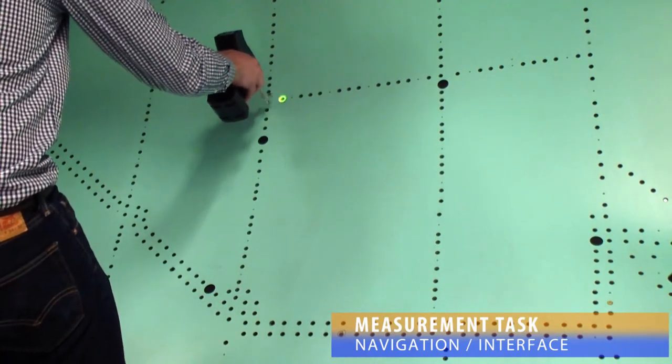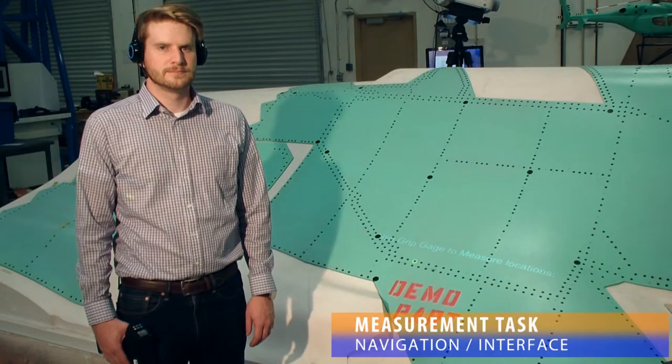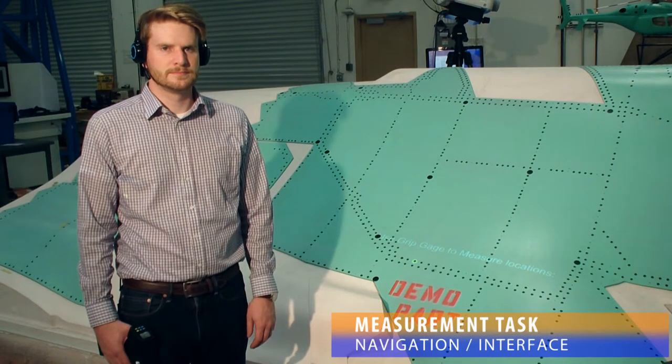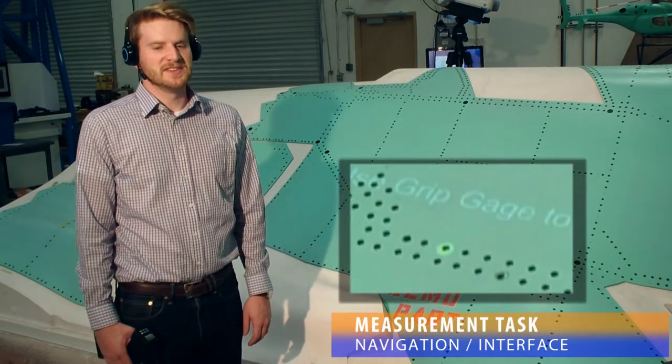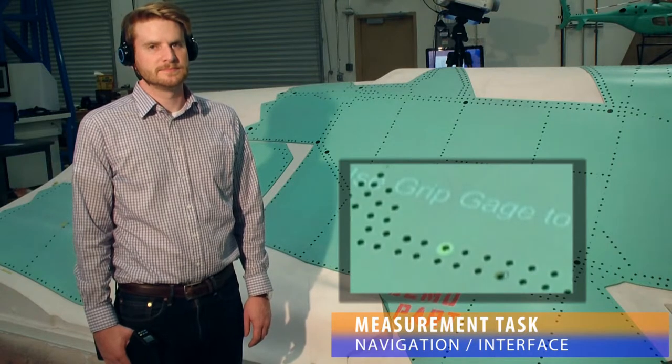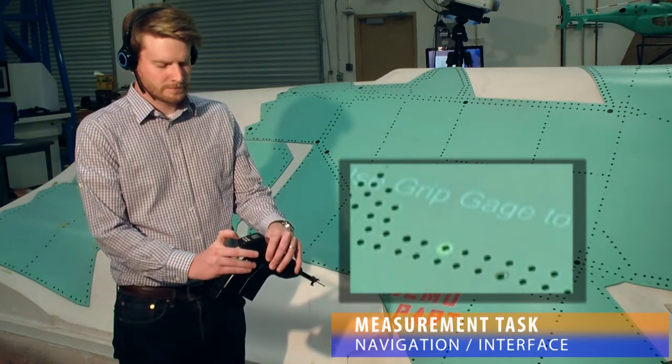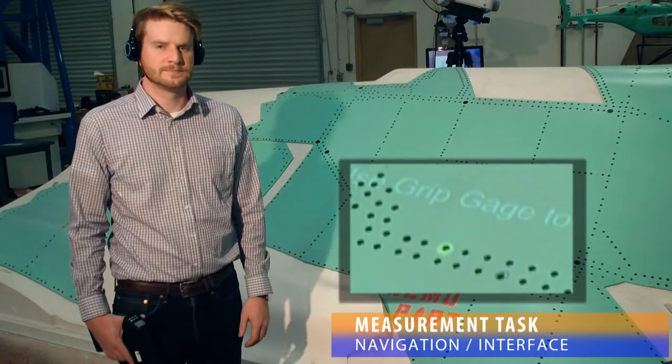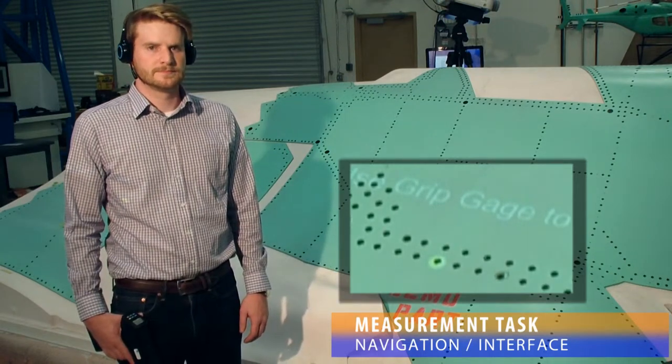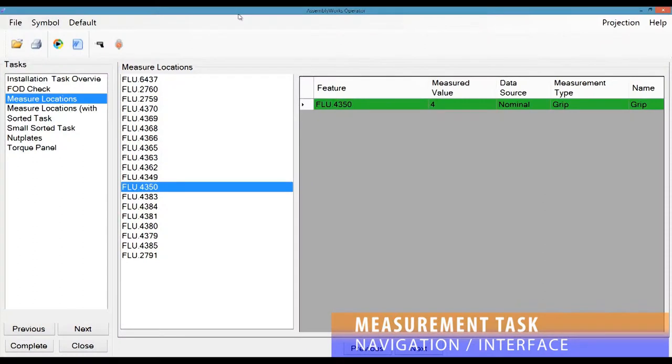While performing measurements, the technician has the ability to skip locations, either with voice commands, a gauge interface, or through the AssemblyWorks operator software. The user may close the task at any time and pick back up at a later date. Should power be lost to the system or the measurement task be closed unexpectedly, the measurements are not at risk of being lost.